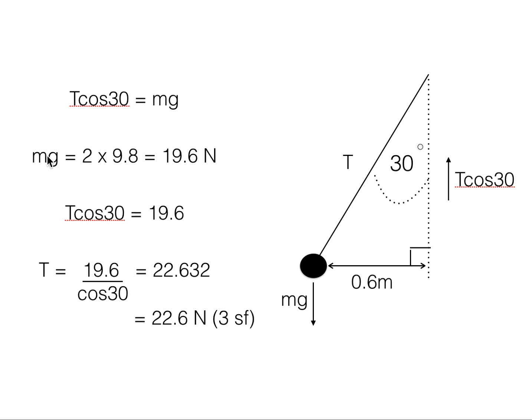Now we can work out the numerical value of mg, the force due to gravity, because we know the mass is 2 kilograms, given in the question, and the coefficient of gravity is 9.8. If we multiply these two together, we get mg, which is 19.6 N, and we can substitute that into our equation for T.